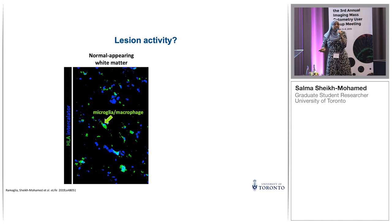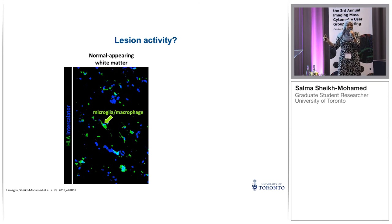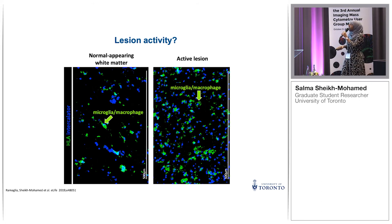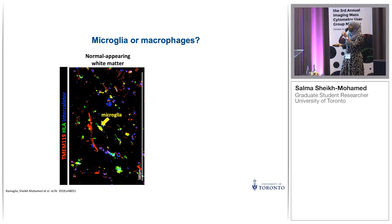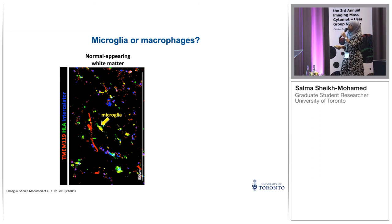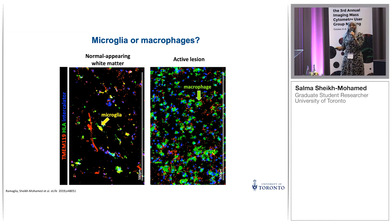Looking at microglia and macrophages: in the normal appearing white matter, we find some HLA positive cells, most likely microglia, which is normal as microglia are tissue resident. In the active lesion, HLA positive cells are found all throughout the tissue. Using TMEM119, a marker specific to microglia, in normal tissue we see mostly yellow double-positive cells — TMEM and HLA positive. In the active lesion we see some microglia but also a lot of HLA single positive cells, which are macrophages, showing that immune cell infiltration has occurred.